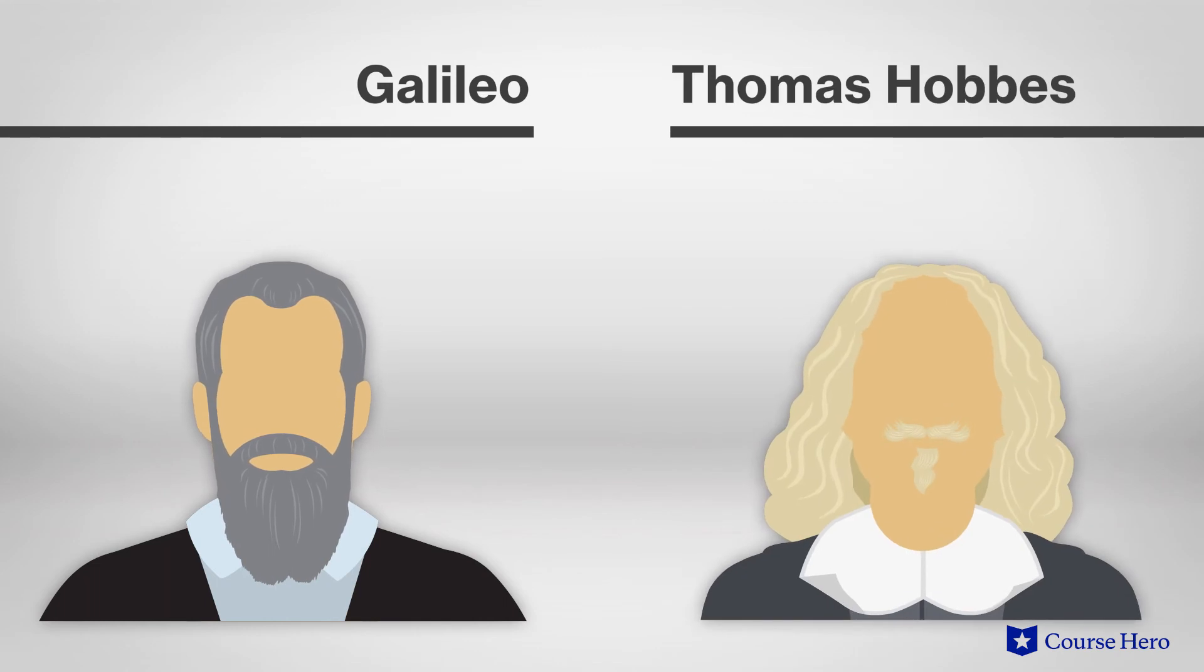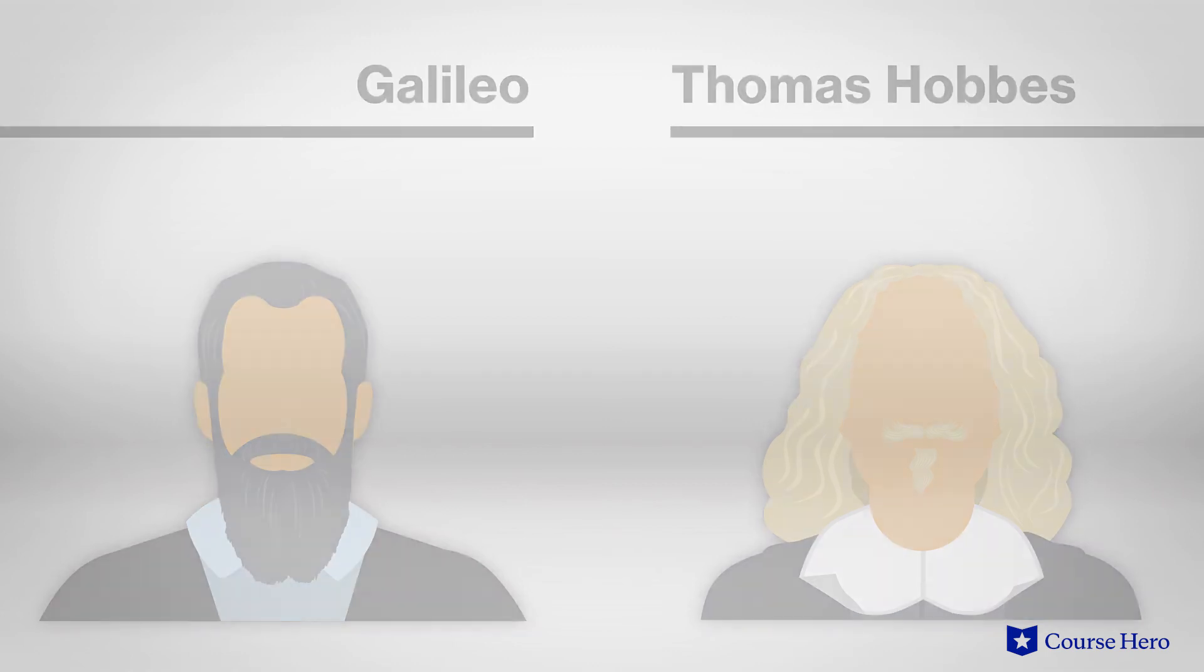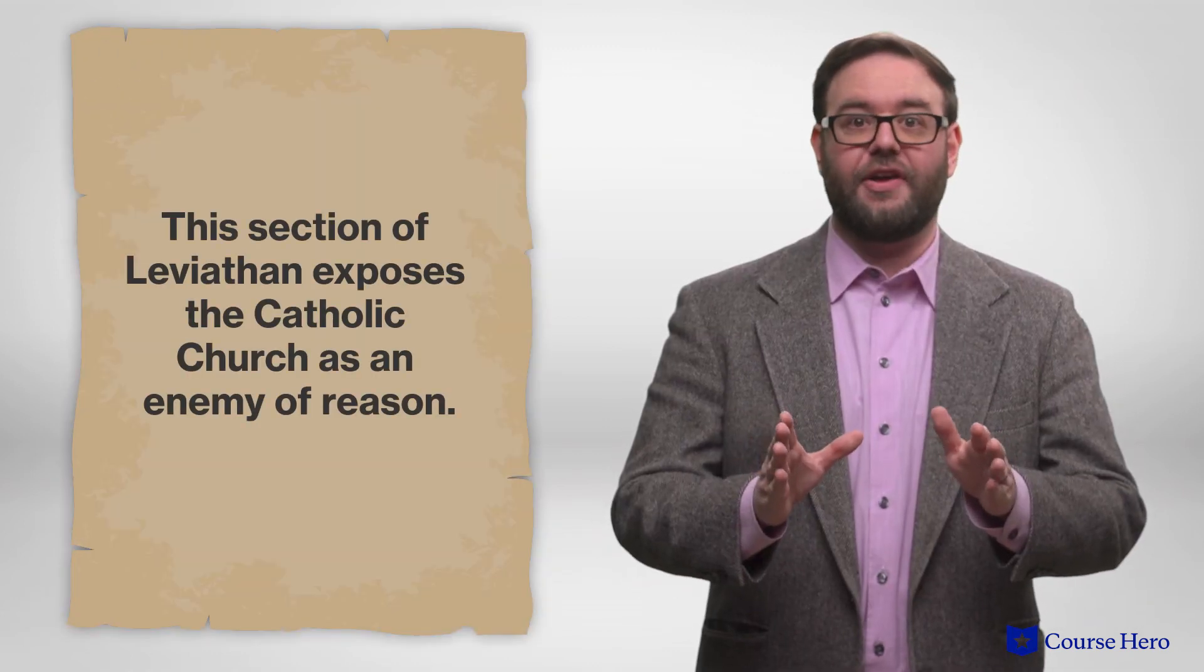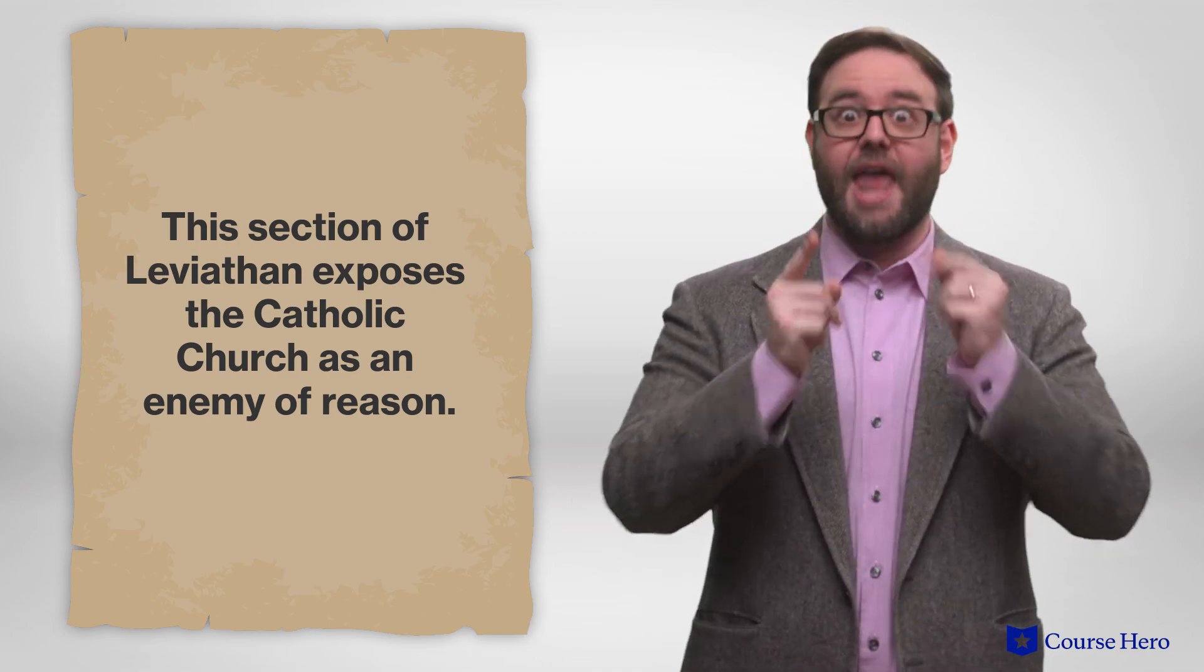Hobbes met Galileo in Florence, likely in the mid-1630s, and decried the narrow-minded church's abuse of power and discouraging his brilliant work. This end of Leviathan exposes the Catholic Church as an enemy of reason.